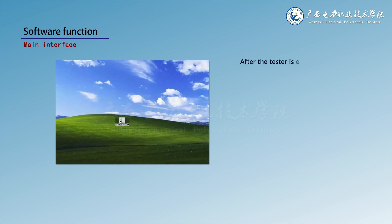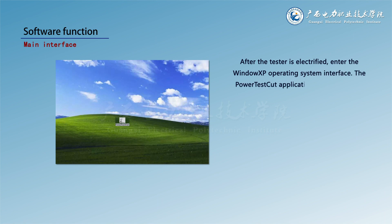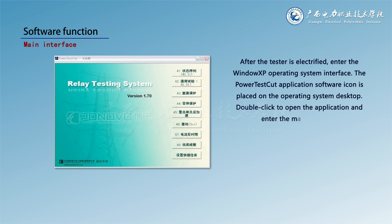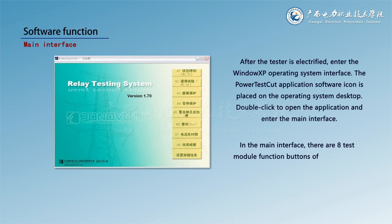After the tester is powered on, it enters the Windows XP operating system interface. The power test application software icon is placed on the operating system desktop. Double-click to open the application and enter the main interface. In the main interface, there are eight test module function buttons A1 through A8, and a setup shortcut task button.